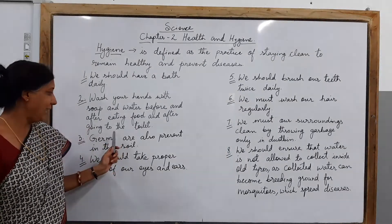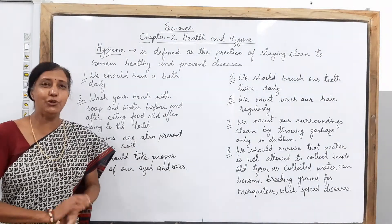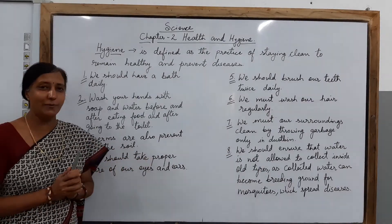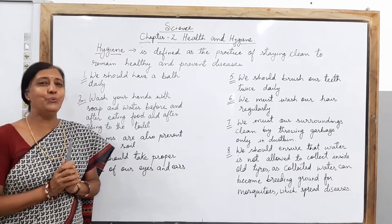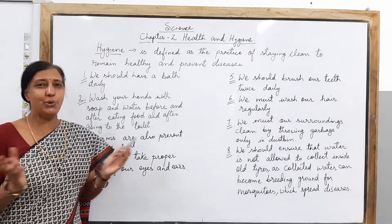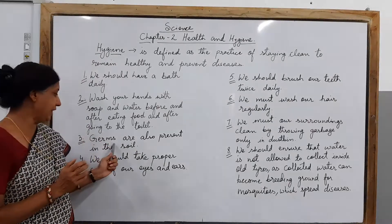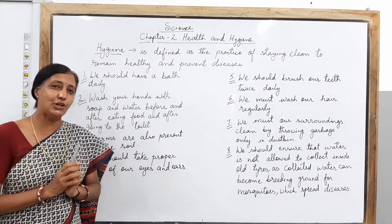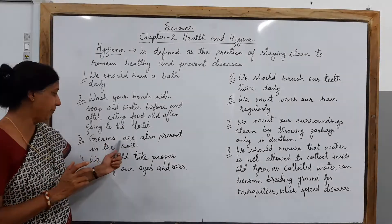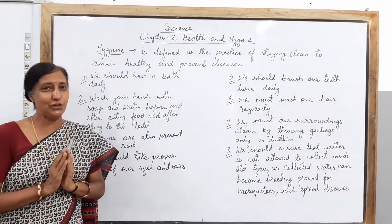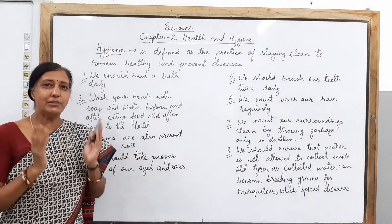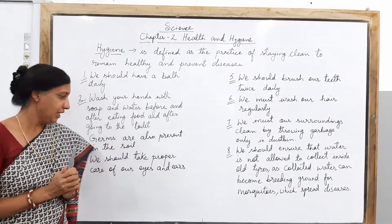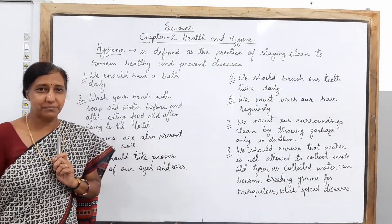So you will follow this rule — wash your hands every time whenever you are starting to eat anything. And whenever you are coming after using the toilet, properly wash your hands with soap. Next point: germs are also present in the soil. Since you are small, you would likely play with the soil and go out on the playground. You must be coming in contact with the soil, and you don't know what kind of germs the soil is carrying. So make it a point that whenever you are playing in the soil, you take care of yourself — take a proper bath or wash your hands and feet before you enter the house, so that no germs can enter your body.